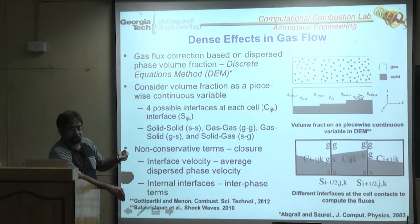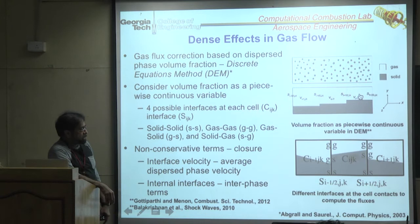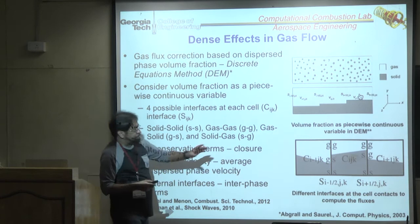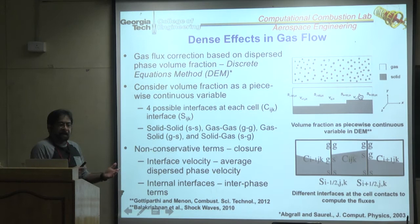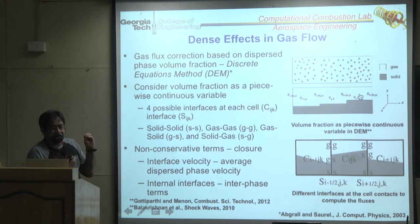When computing mass and momentum fluxes, we estimate that the cells have changed due to particle blockage. This creates what I call a nozzling effect — particles block the flow, accelerating the gas in some places and slowing it in others, similar to how a nozzle restriction affects flow.